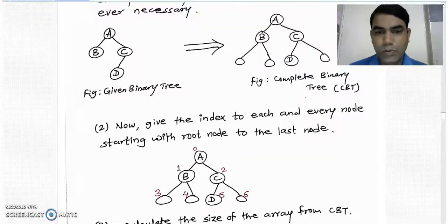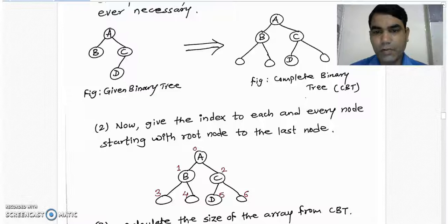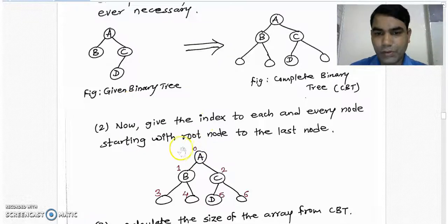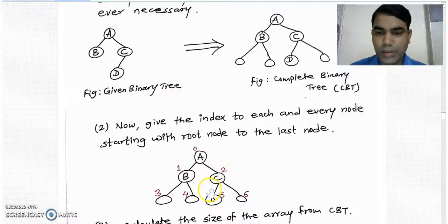In step 2, we give the index to each and every node starting with the root node to the last node. Root node is indexed as 0. Its immediate children will be indexed as 1 and 2 and so on till the last node.